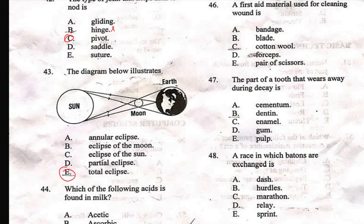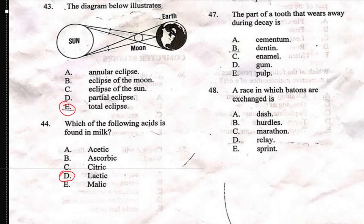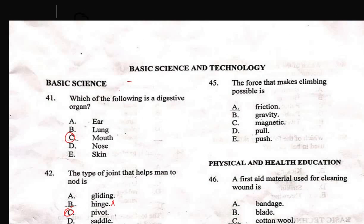Question 44 says: which of the following acids is found in milk? A) acetic, B) ascorbic, C) citric, D) lactic, E) malic. Among the options, the correct answer is lactic, which is D.